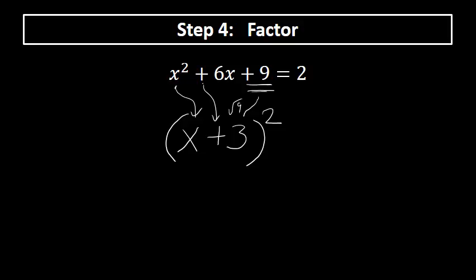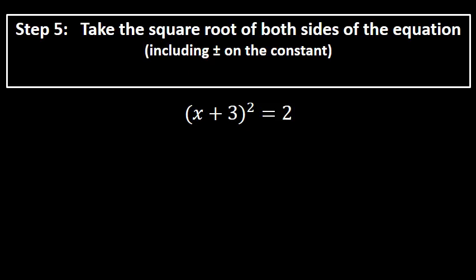That process of bringing down the x, the plus sign, and the square root of the added value will always work if you completed the square correctly in step three. The right side of the equation remains 2 at this step.